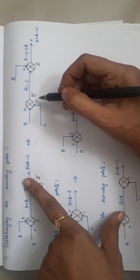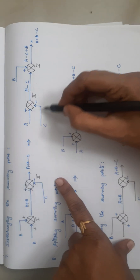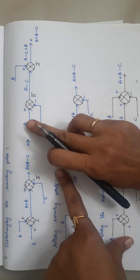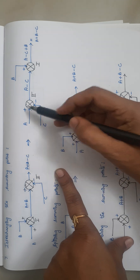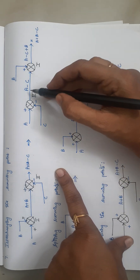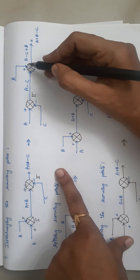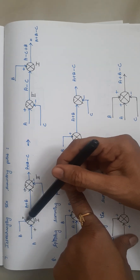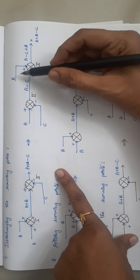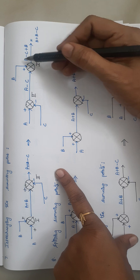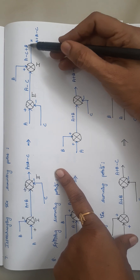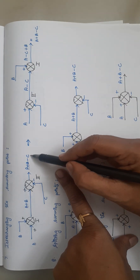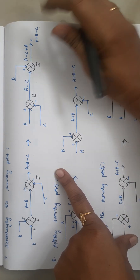After interchanging, the first summing point (originally point 2) has inputs A and C (with C negative), giving output A − C. This feeds into the second summer which also takes input B, giving A − C + B. Rearranging gives A + B − C. The output in both cases is A + B − C — the result is the same after interchanging the summing points.